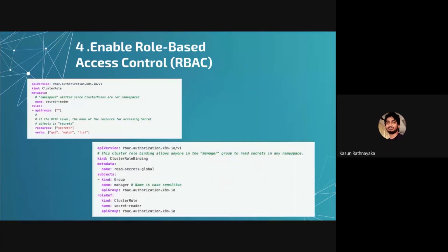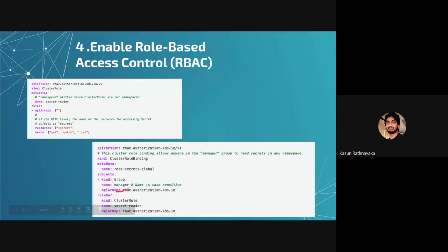Here's a good example: you can create a ClusterRole that gives, say, get, watch, and list access — and that will be applied across all namespaces. Let's say somebody needs to access secrets — instead of blocking namespace-wise, you can create this ClusterRole and bind it to cluster groups depending on your use case. If an application needs a certain permission, you can create a service account with the right role and run that service account in your deployment. That is the easiest way to give permissions to users and applications in RBAC.